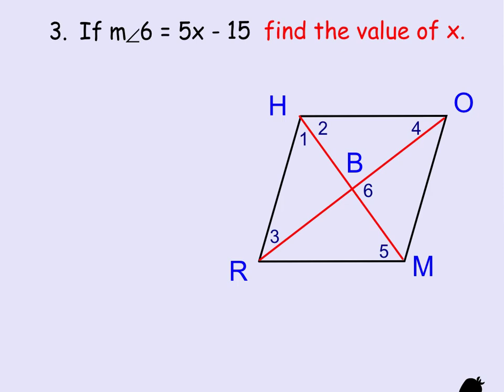In this third example, it tells us that the measure of angle 6 is 5x minus 15, and we want to find the value of x. Well, in order to do this problem, you have to remember the property that says, in a rhombus, diagonals are perpendicular to one another.